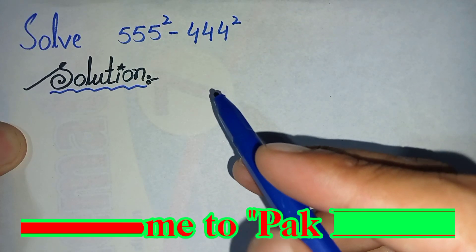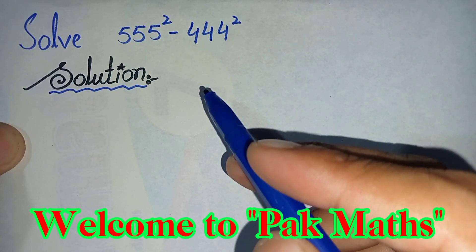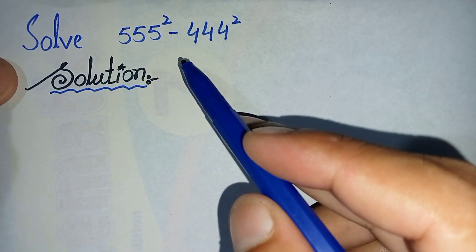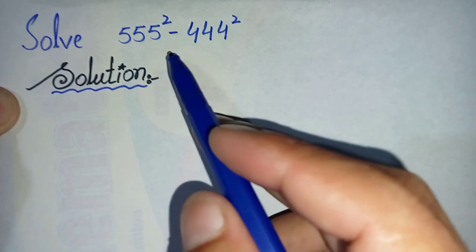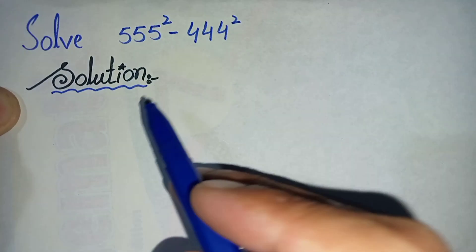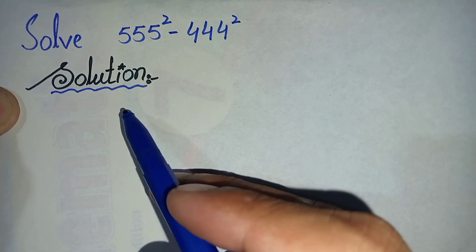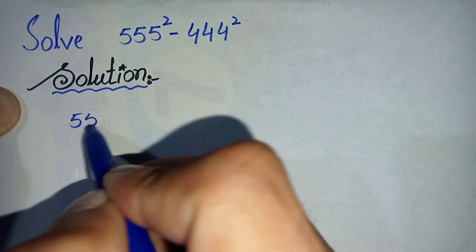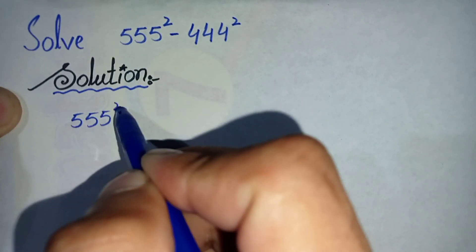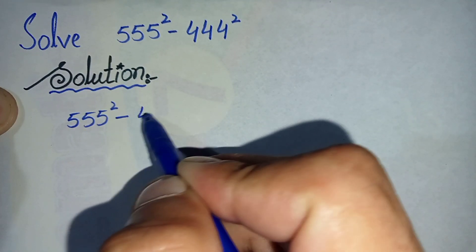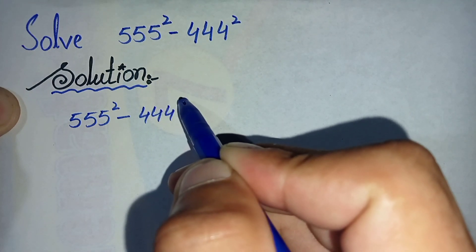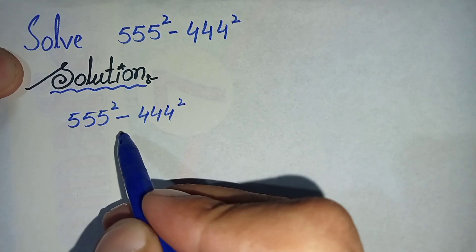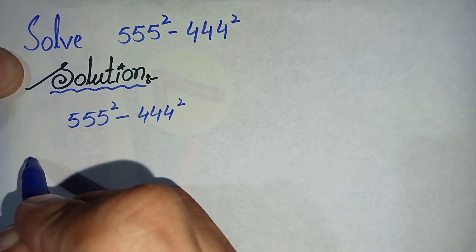Hi everyone, welcome to Parkmas. In this video I am going to solve this exponential math problem using two different methods. We will rewrite the question in the solution and try to solve it using the first method. The question is 555² minus 444².